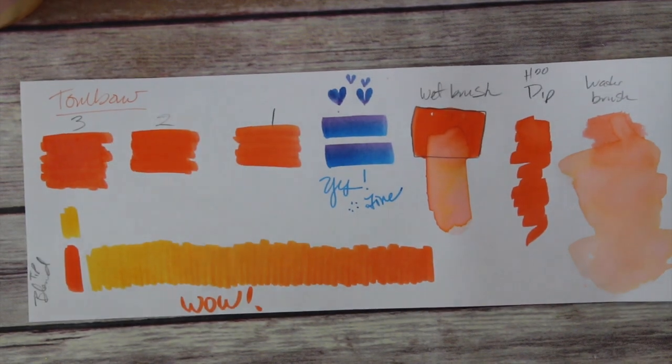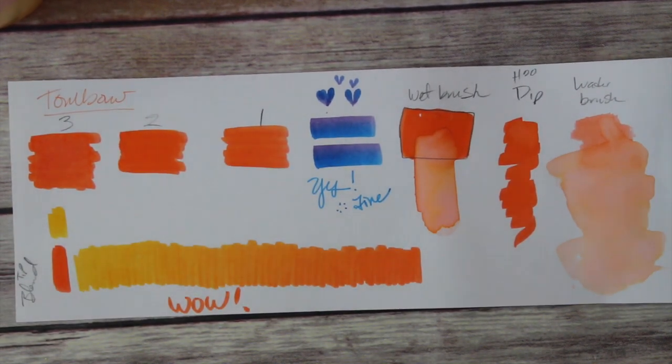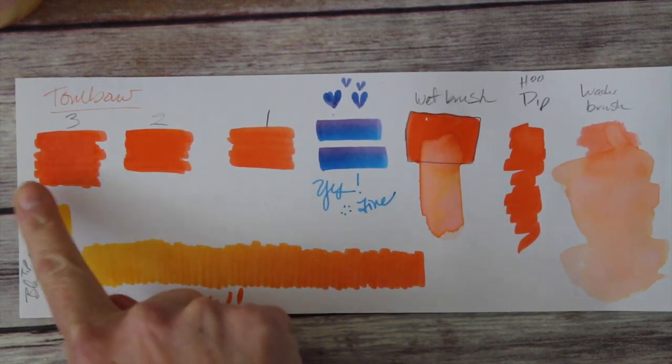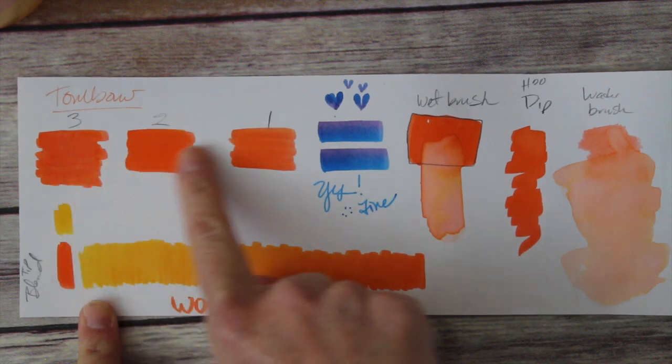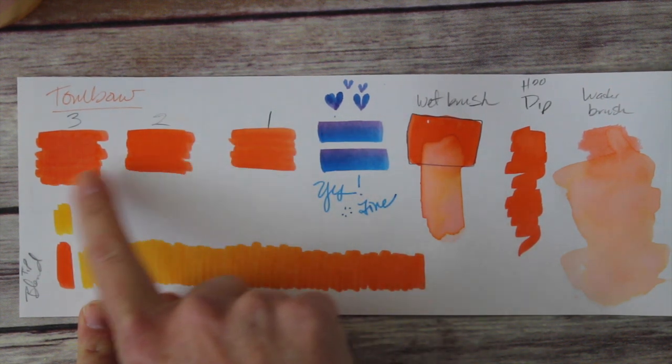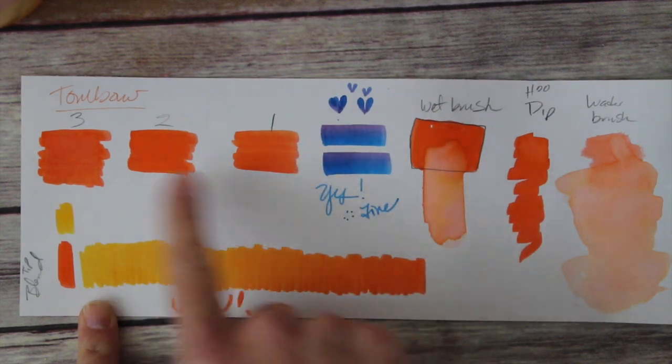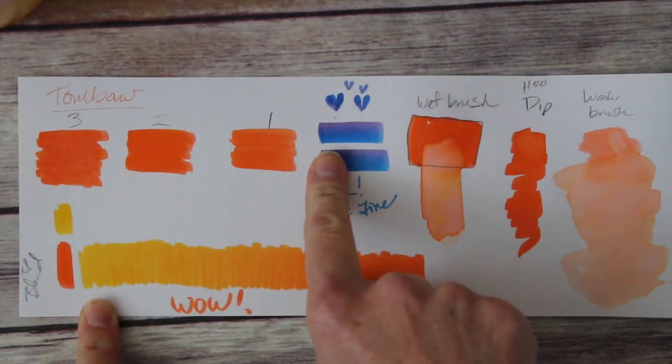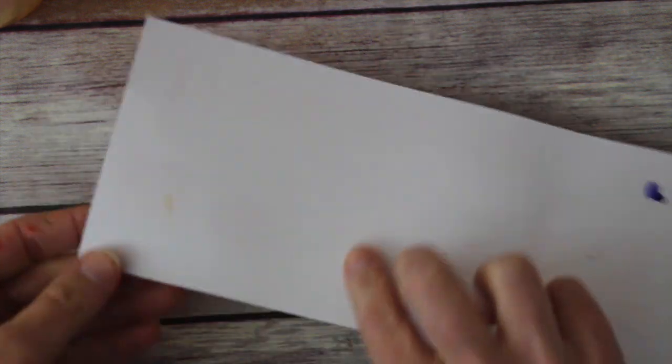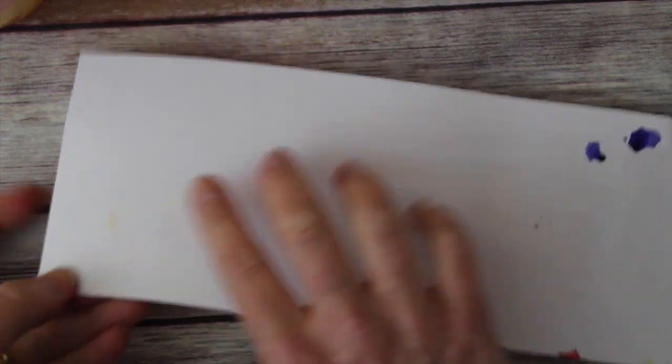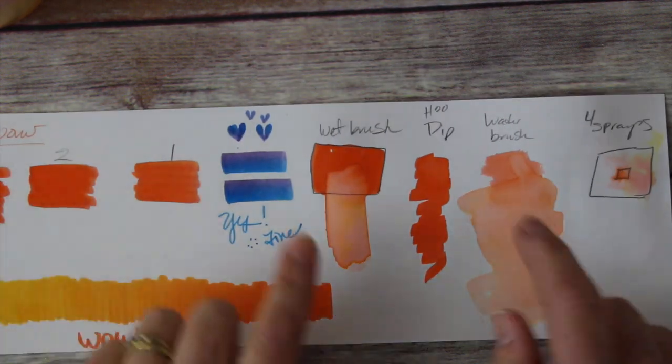Now we're going to take a look at some swatches. Here I started off by putting one, two, and three coats. As you can see, it doesn't really make a difference. It puts down a lot of color right off the bat, so two layers won't necessarily make the color any deeper or darker. You can notice it actually did not bleed through even with three layers.